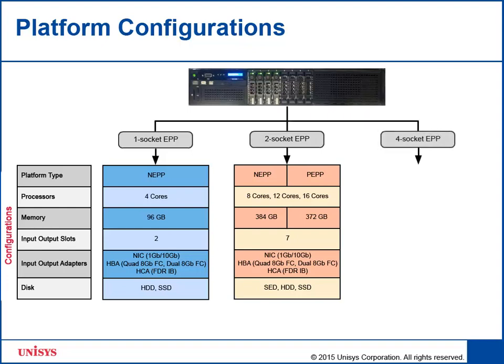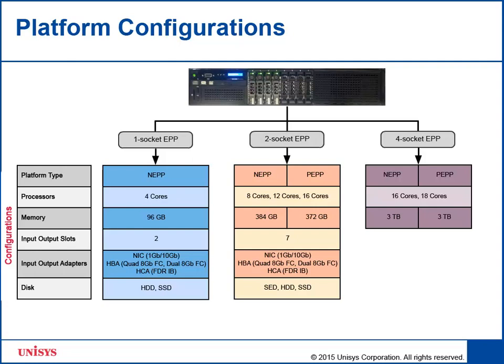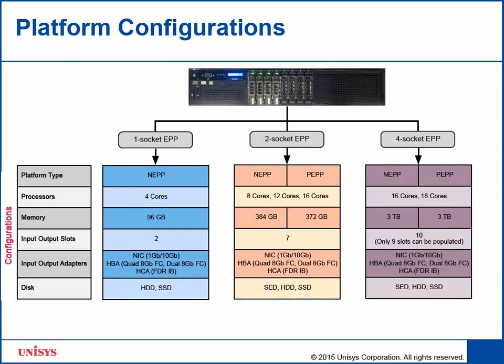Four socket EPP is also available for both NEPP and PEPP platform types, and consists of 16 and 18 core processors, with 3 TB of memory for NEPP and 3 TB for PEPP. This platform configuration has 10 input-output slots, but only 9 slots can be populated, and uses the same set of input-output adapters and disks as two socket EPP. Each of these platform configurations includes an appropriate RAID controller.